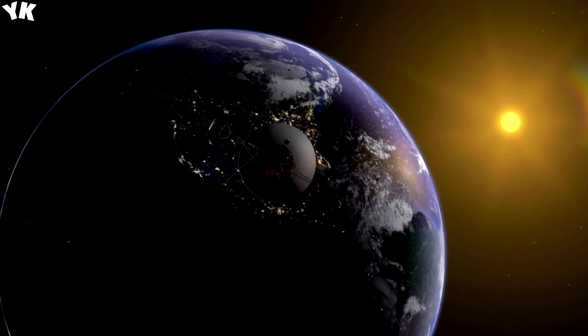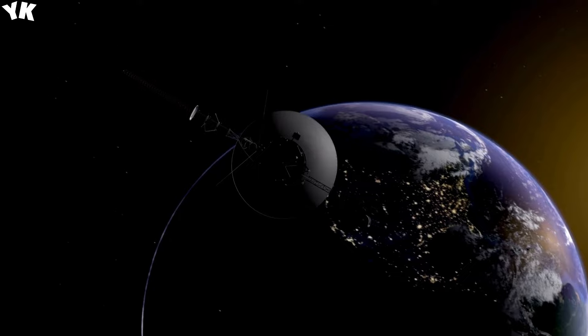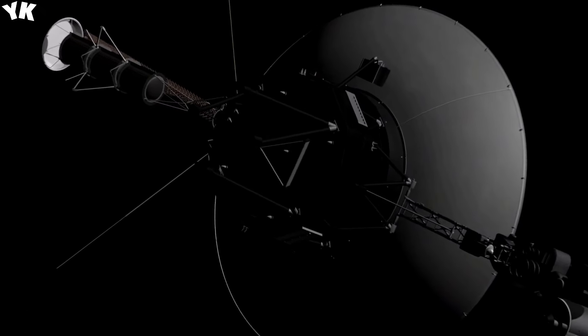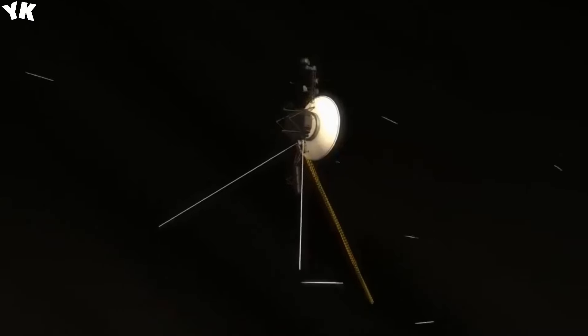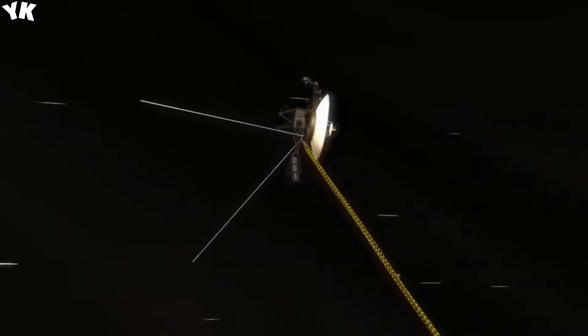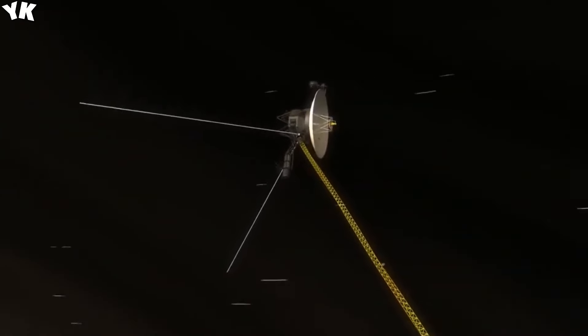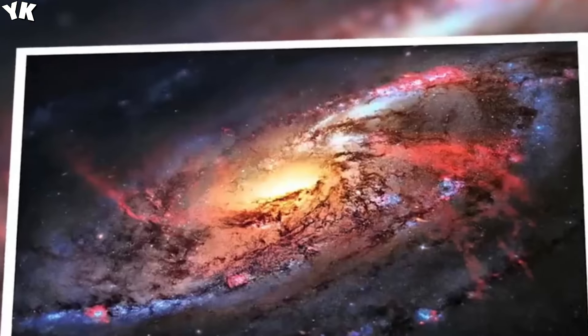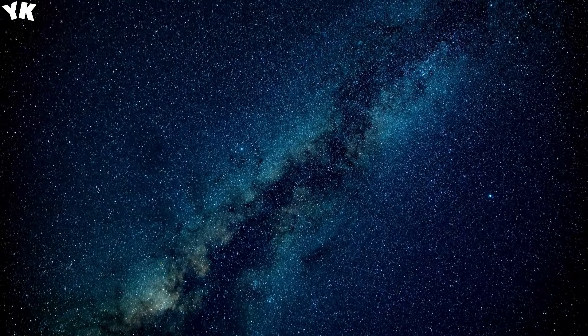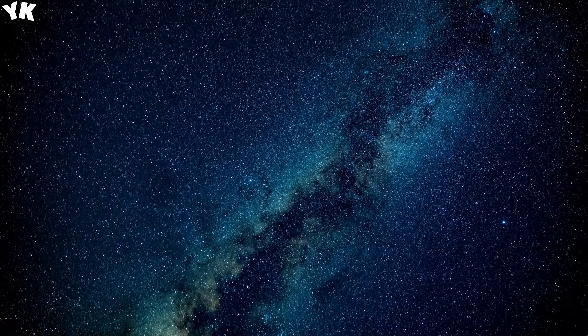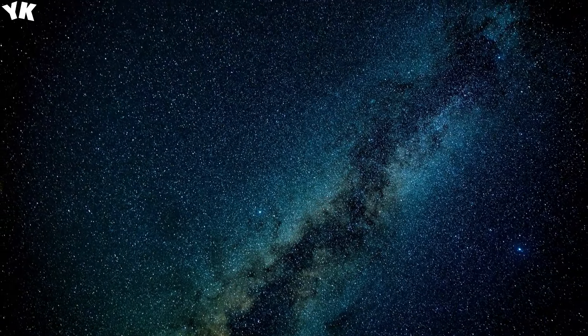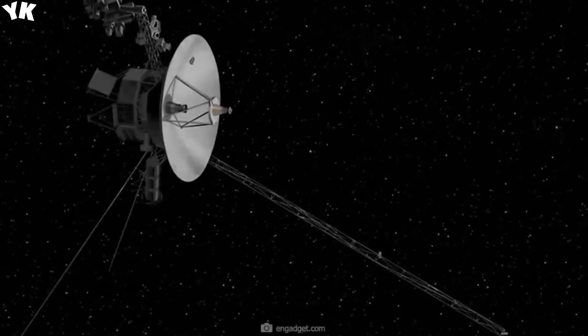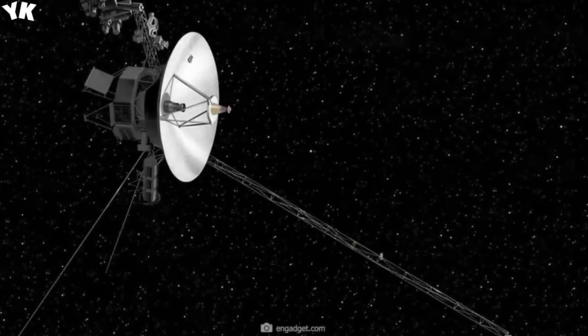Now, as Voyager 1 diligently gathers and transmits valuable data back to Earth, scientists face the task of examining this information to unravel the mysteries of the cosmos. Amidst the continuous flow of data, a recent discovery has captivated researchers worldwide. A signal that perplexed and intrigued—Voyager 1 detected the presence of 300 unknown objects traversing interstellar space. These unidentified objects, emerging from the depths of the cosmos, challenge our current understanding of the universe.